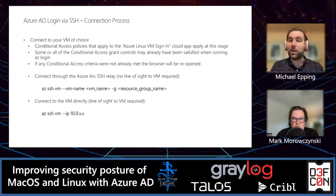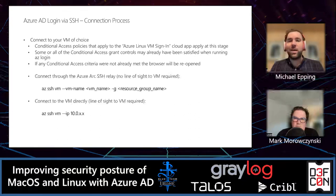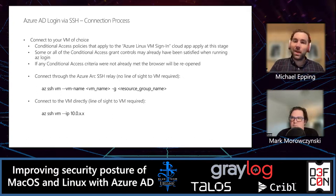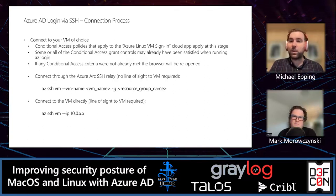Then run the 'az ssh vm' command, specifying either the IP address or the VM name and resource group. Conditional Access policies on the Azure Linux VM sign-in cloud app trigger at this stage. However, if you already satisfied controls like device compliance and MFA during 'az login', you won't be prompted again for interactive authentication. The commands are identical for both Azure VMs and Azure Arc VMs — from the end user's perspective, the underlying infrastructure doesn't matter.